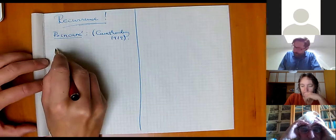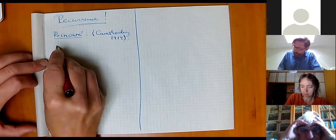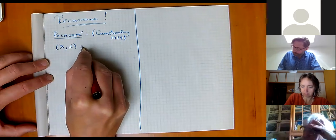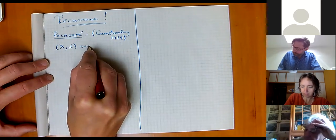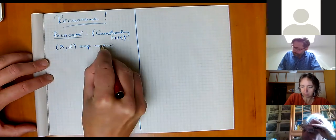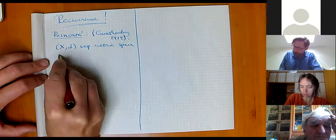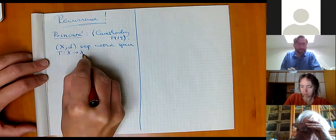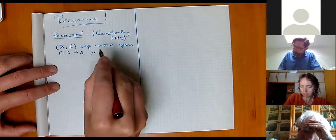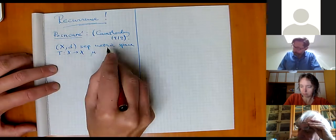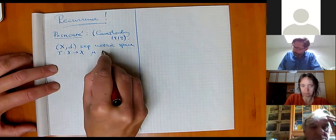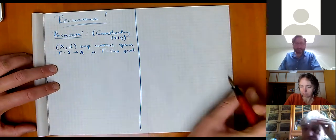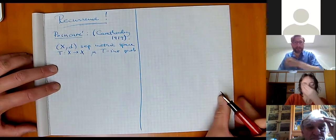One way of stating it is that if you have a metric space which is separable — so a separable metric space — and then we have some dynamical system, some transformation which is acting on this space, and we have a T-invariant probability measure mu.